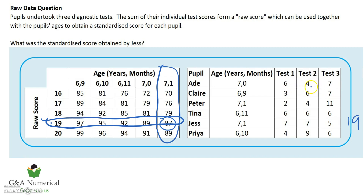First, let me calculate the sum of each pupil's test scores. ADE: six and four and seven gives seventeen. Claire was sixteen. Peter was seventeen. Tina is eighteen. Jess we already did — nineteen. And Priya is also nineteen. So that's pretty much the hard work done.